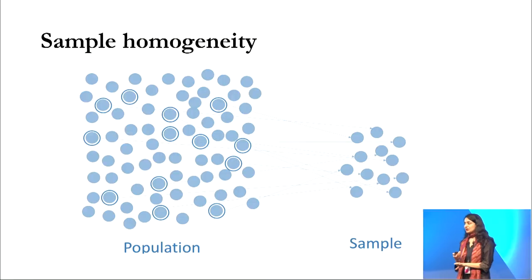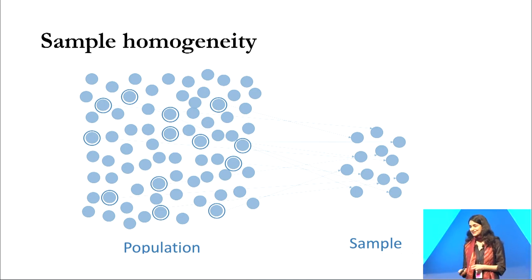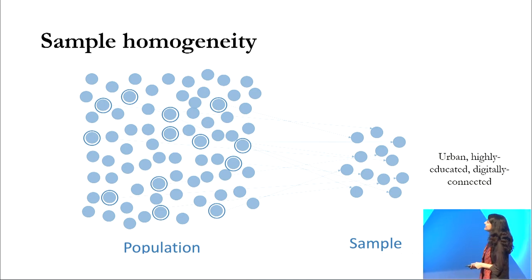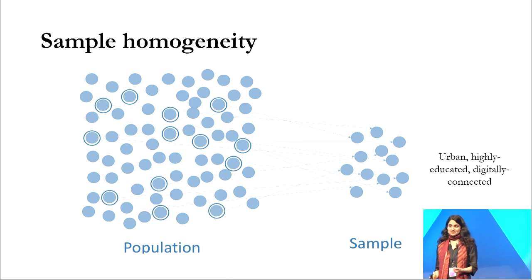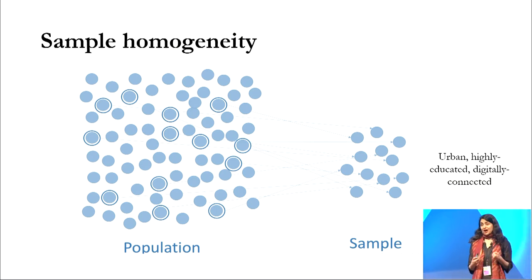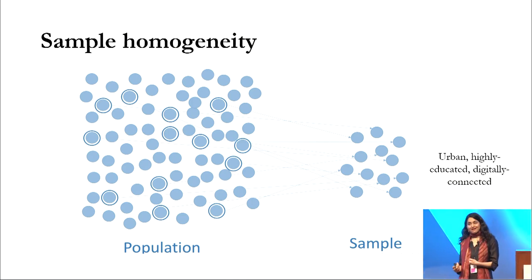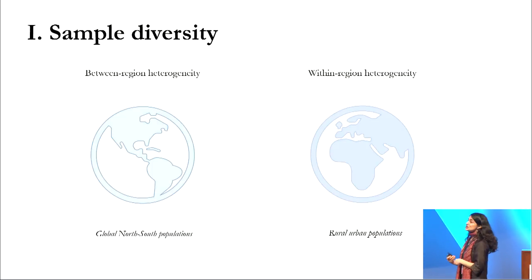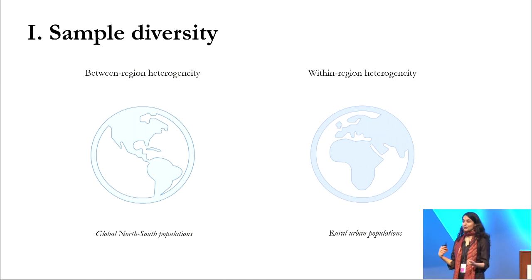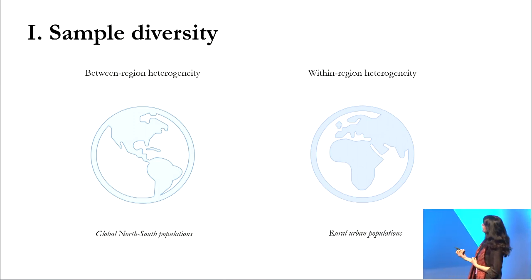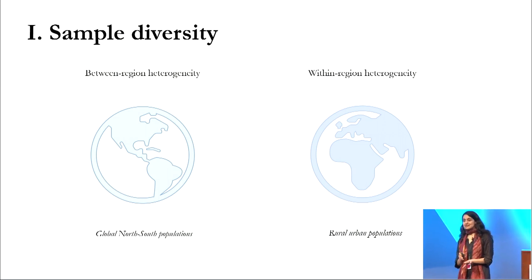I want to take one step back and really think about how we sample populations in research. Naturally, we take a slice of the world's population to meaningfully make inferences about human behavior. However, if that slice is skewed from the start, then that will yield not very generalizable effects. To truly capture sample diversity, we not only need between-region heterogeneity — which is global north-south populations — but we also need to start paying attention to within-region diversity, which is particularly more salient in rural versus urban areas in the global south.